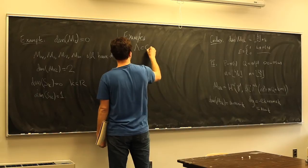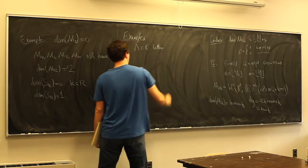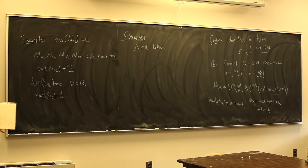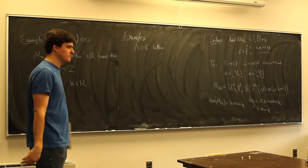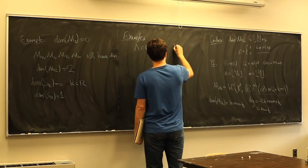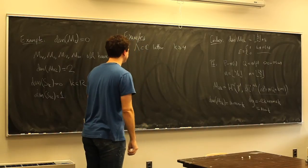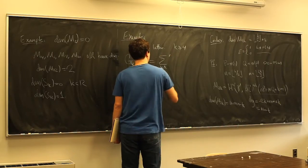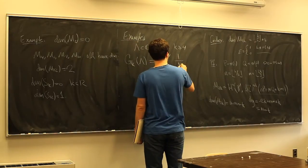Let me do some examples now. Suppose we have a lattice and want to build a modular form — we need to associate to a lattice a number that scales correctly when we scale the lattice. The easiest way is to sum terms involving the elements of the lattice. We can't sum them directly, but we can sum 1 over elements of the lattice to a large power, and that will converge. So for a lattice Λ and k ≥ 4 (even), define G_k(Λ) = Σ'_{λ ∈ Λ} λ^{-k}, where the prime means we omit the zero element.